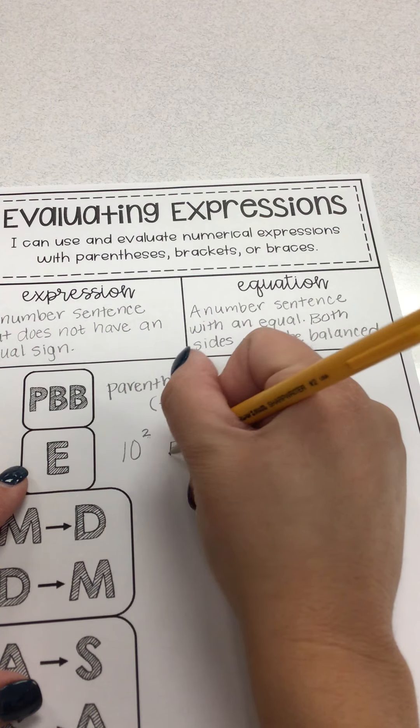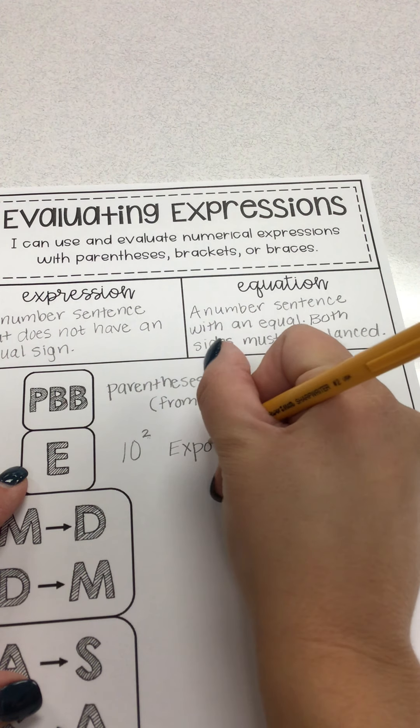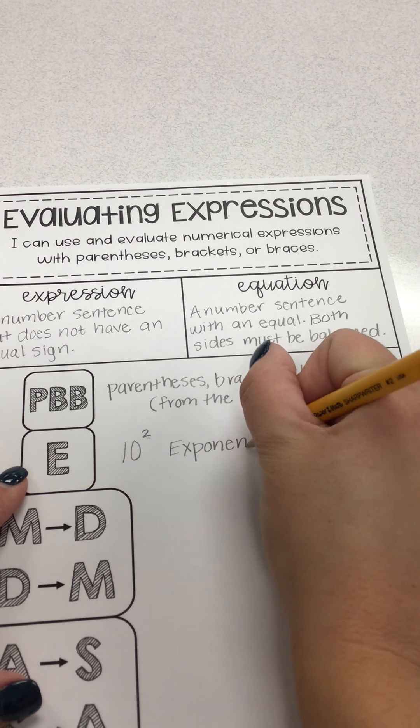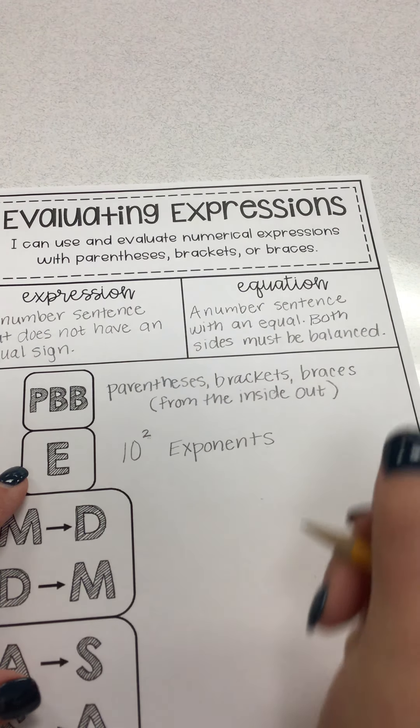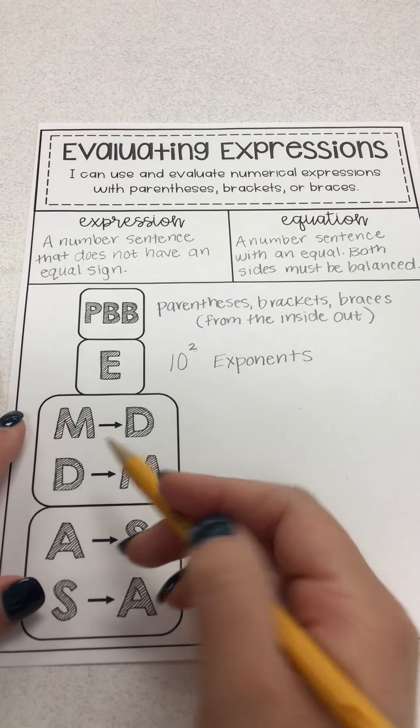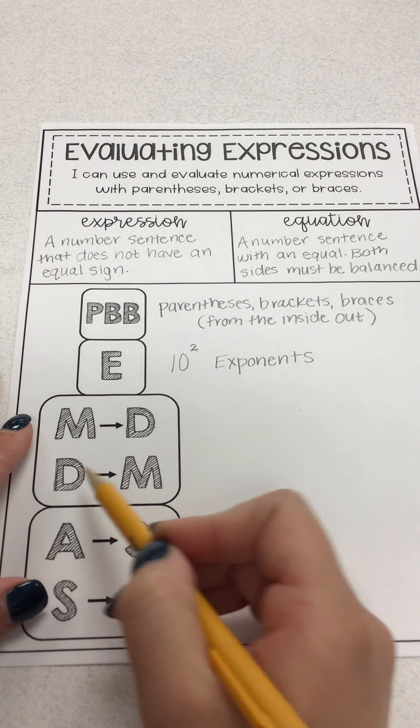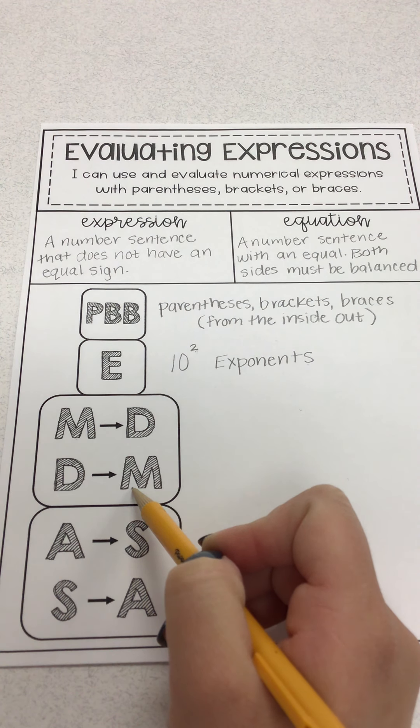So exponents is next in your order of operations, then multiply, divide, or divide, multiply, whichever comes first.